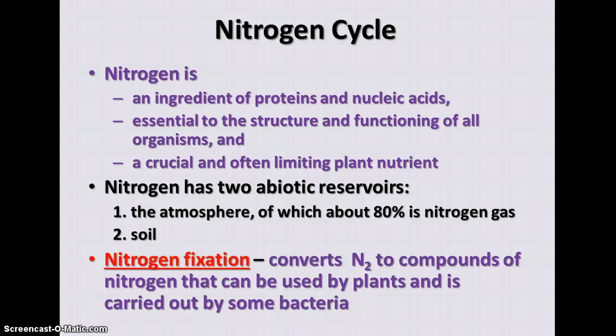Nitrogen is another important substance, found in amino acids that make up proteins and also in nucleic acids — it's essential to all living things. It's often a limiting nutrient for plants; if you put fertilizer on your grass in the springtime, the first thing you'll notice is that it gets much greener quickly, due to the nitrogen now available for plants to assimilate into their proteins. There are two abiotic reservoirs of nitrogen: the atmosphere, which is 70 to 80% nitrogen gas, and the soil. Neither plants nor animals can directly use nitrogen gas — it must be converted into nitrogen compounds.